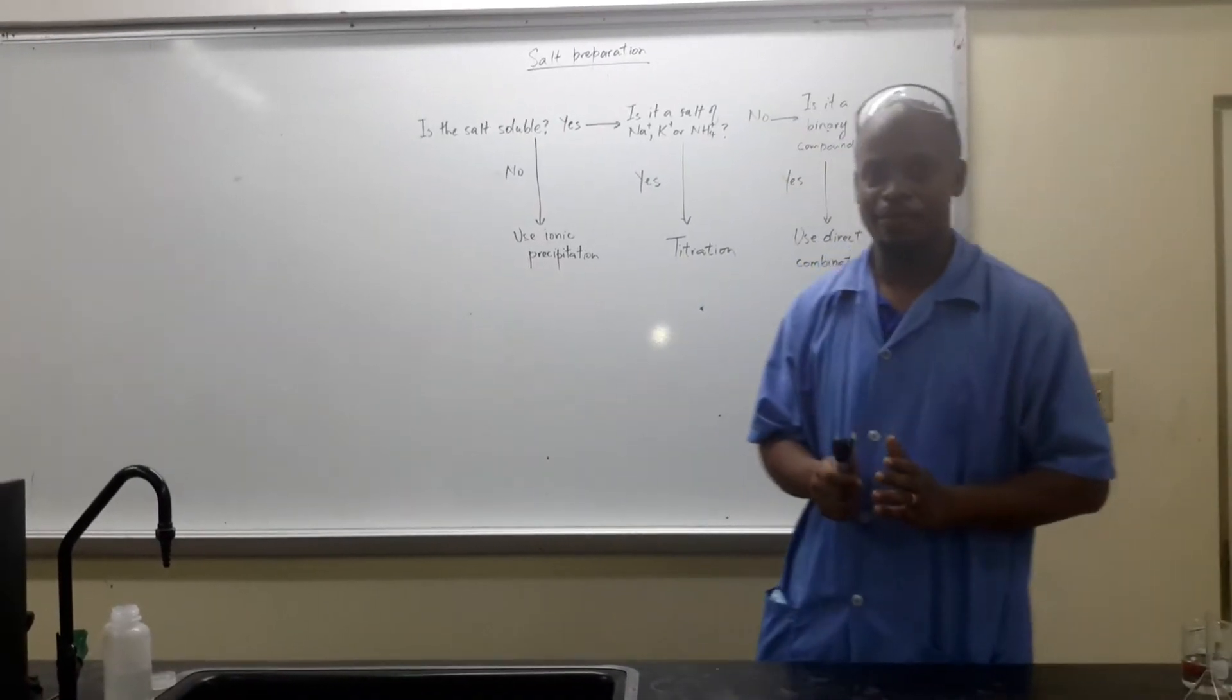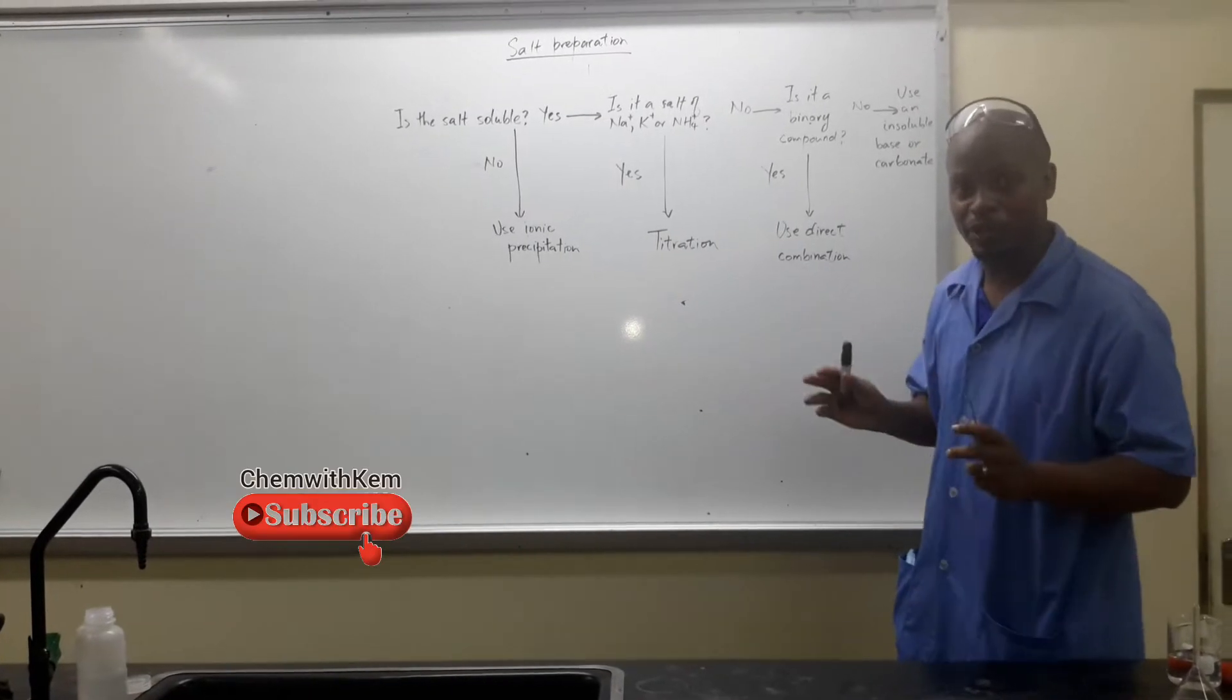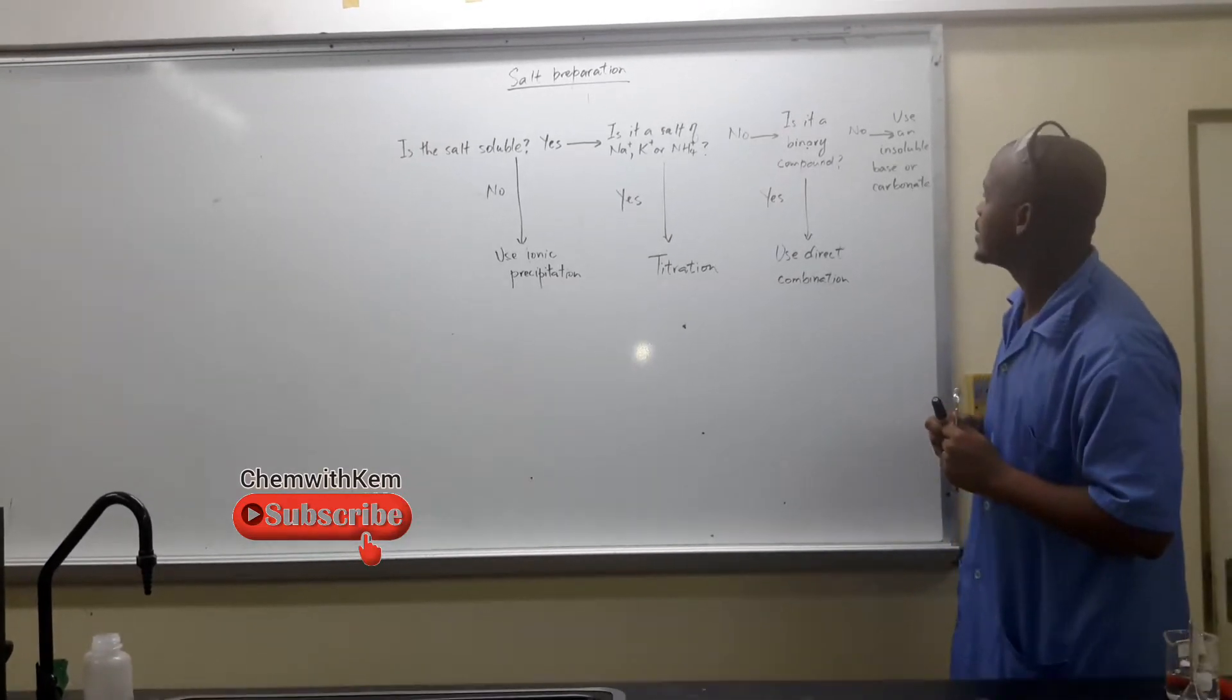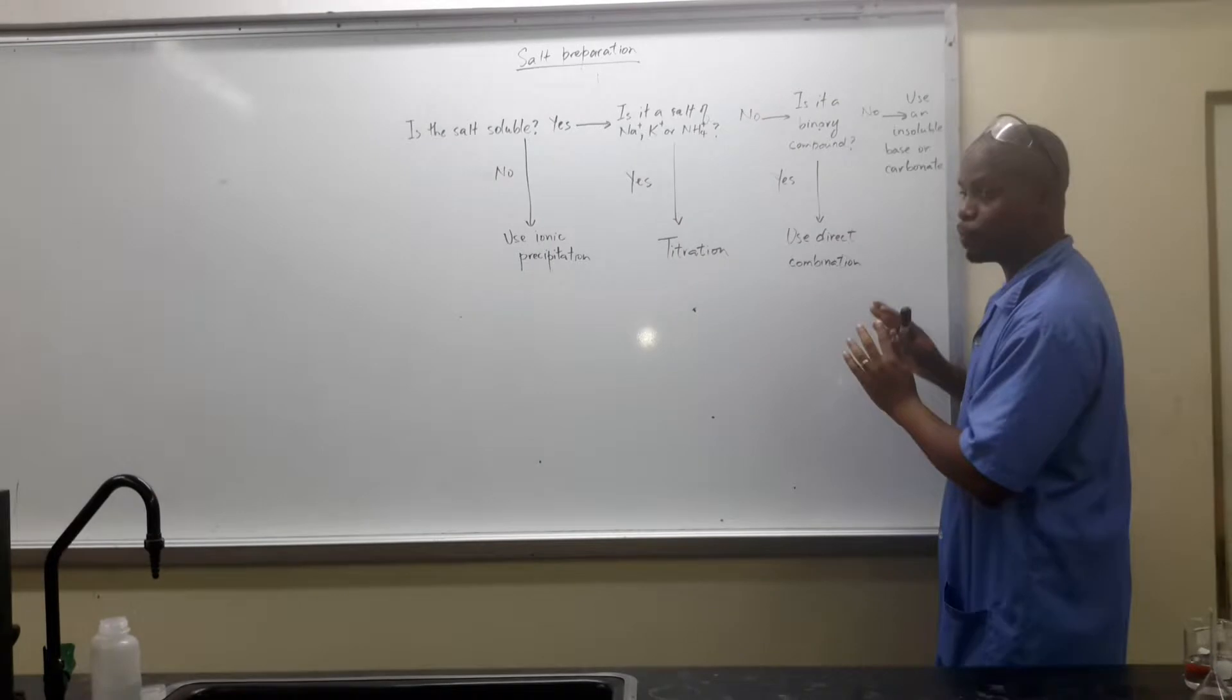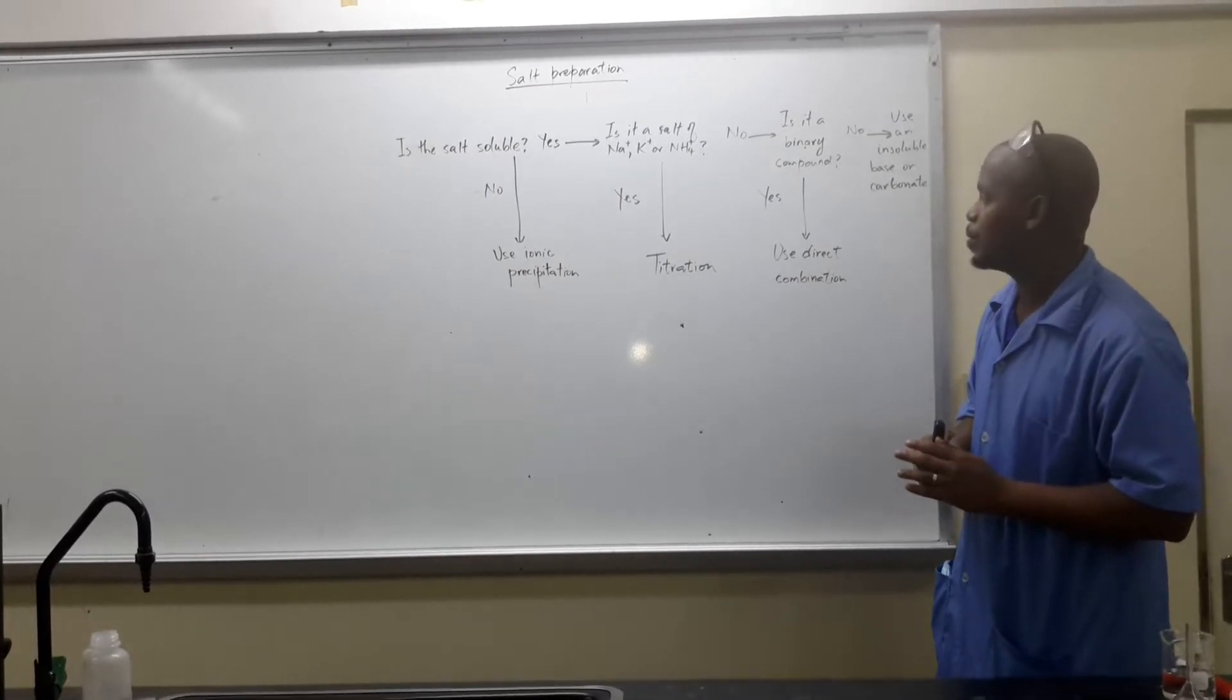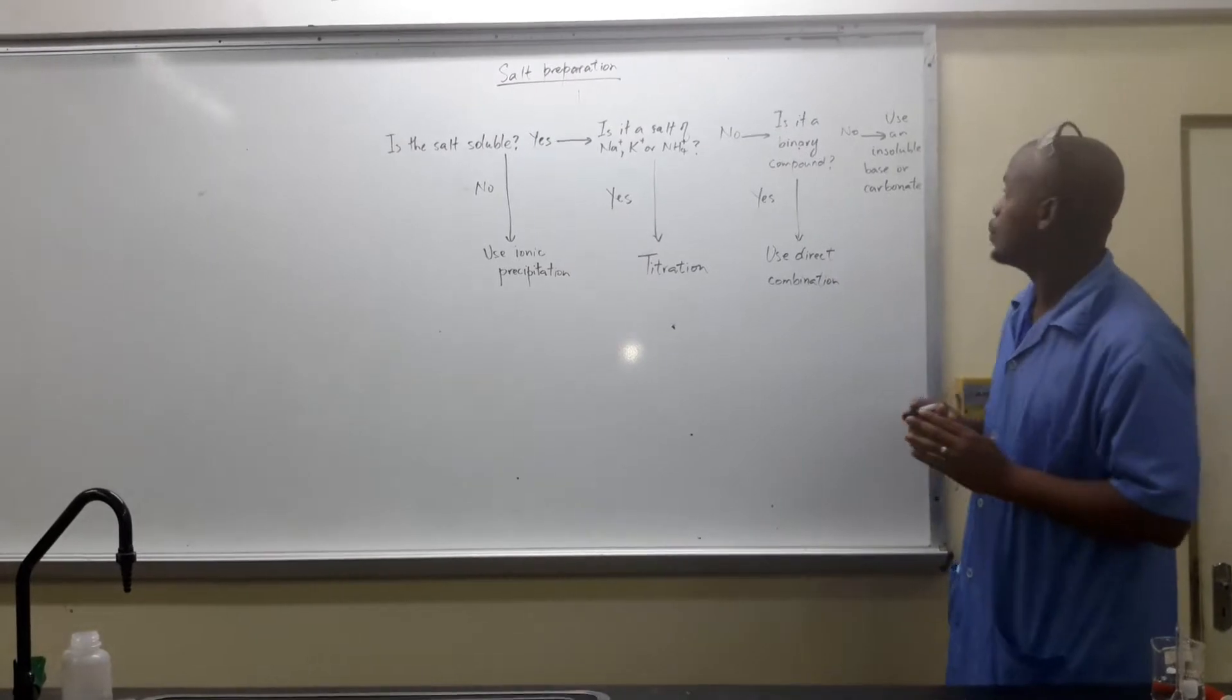We're continuing with salt preparation. We have prepared our sample of sodium chloride and we move along the chain here. If the salt that we're preparing is a binary compound, then we can just combine the reagents directly like iron with chlorine. No, we are not going to do that. We're going to be looking at what if it's not a binary compound.